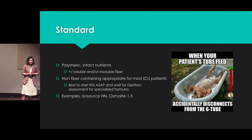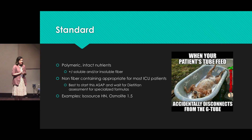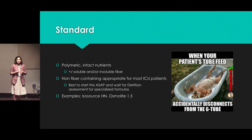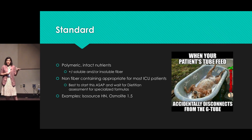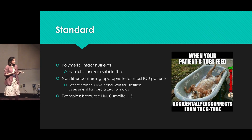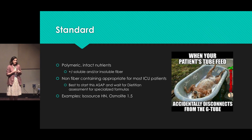First you have your standard formula — this is your workhorse type formula. They may or may not have fiber, and they are just a good formula to start for anyone. You can really just start this at 10, 20, 30, or 60 mL an hour. Most patients are going to do okay with this in the ICU. I've added some names of formulas just so you know what that type of formula looks like, but this is in no way an endorsement of any specific formula. This is your best type to go ahead and get started until you can consult your dietitian to talk about a more specialized formula.